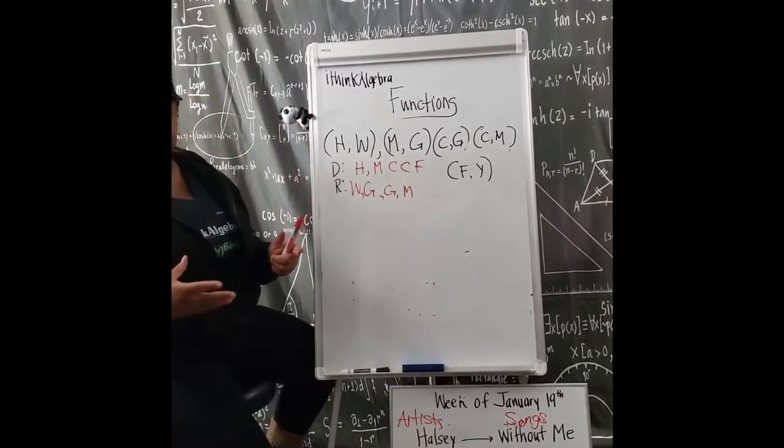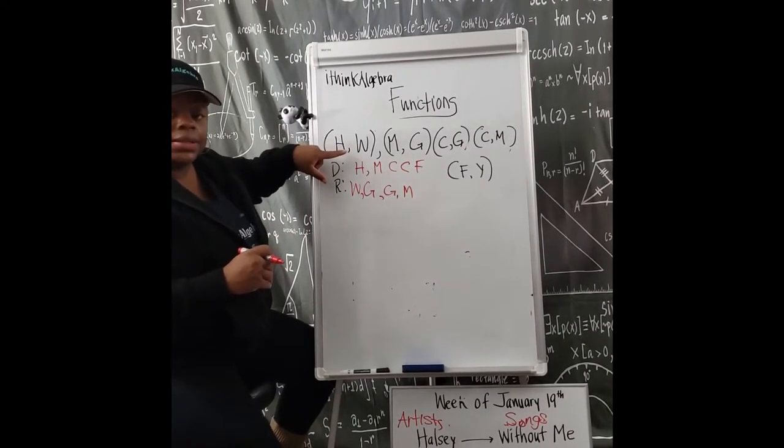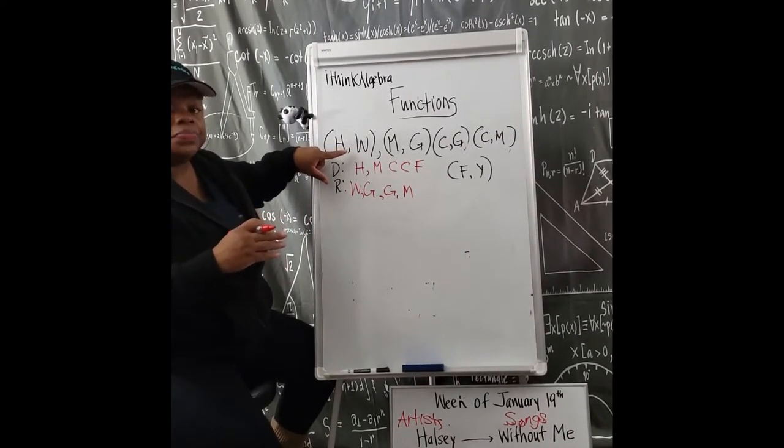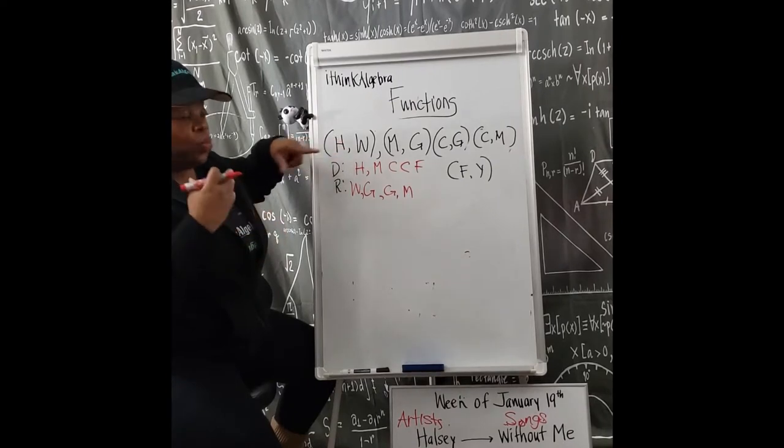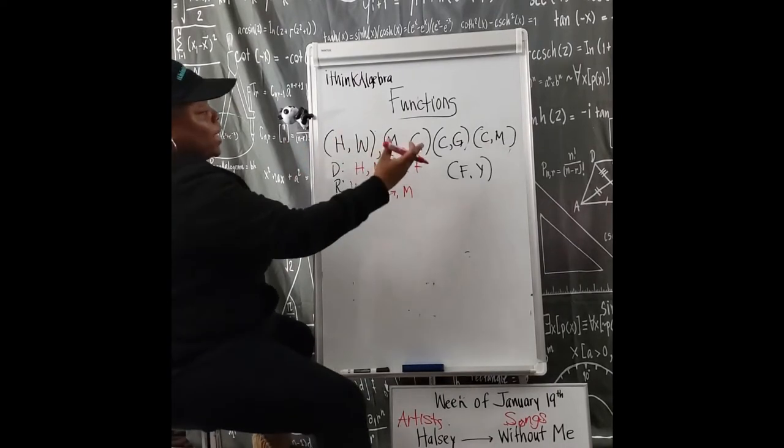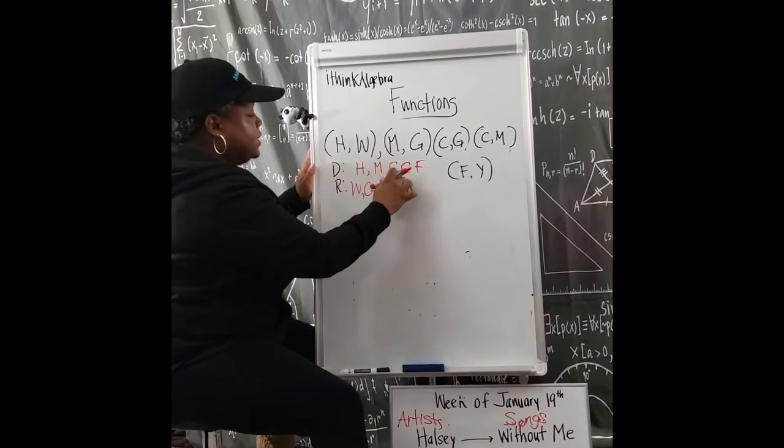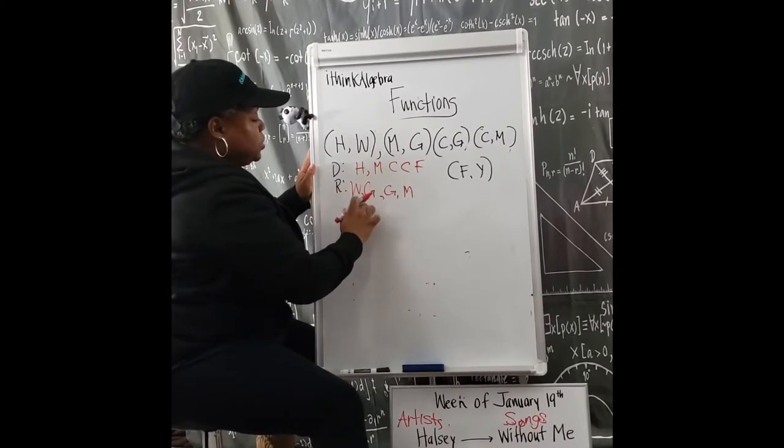Okay. So a function says that for each first coordinate, I have to have exactly one. I have to actually pair up with exactly one Y coordinate or a second coordinate. So I have H, M, C, C, F, W, G, G, M.